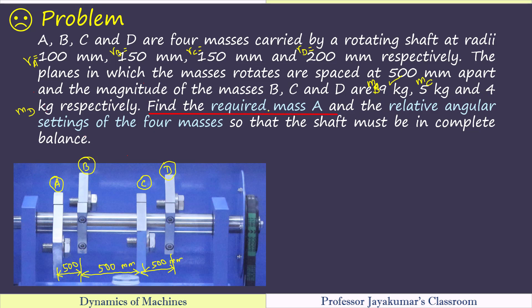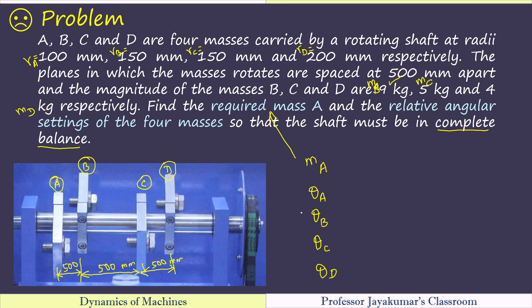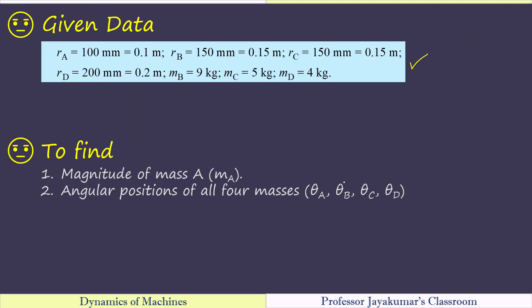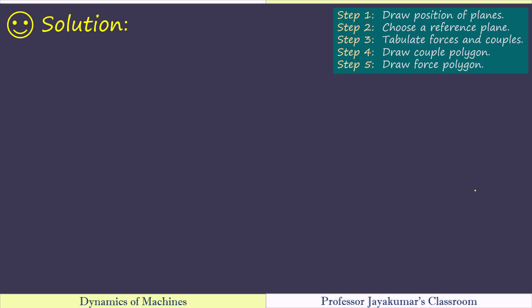What we need to determine: we have to find the required mass A (Ma) and the relative angular settings of all four masses so that the shaft must be in complete balance. In terms of angles, we need to determine theta A, B, C and D. These are all the required data. As always, we have listed out all the given data. In order to find the solution, we will be using the five step procedure that we have highlighted.